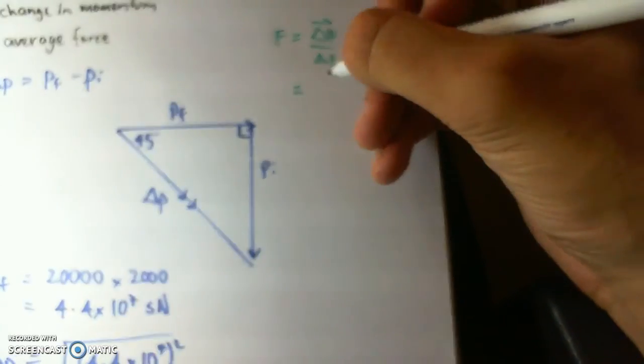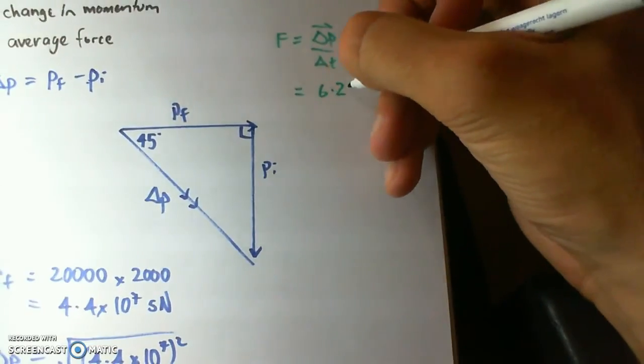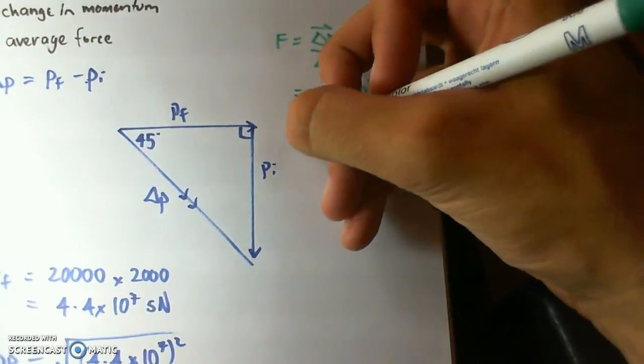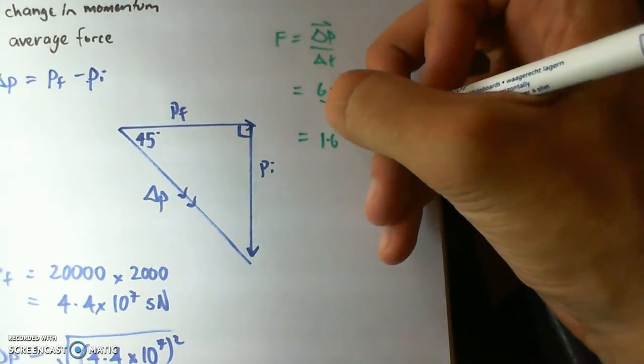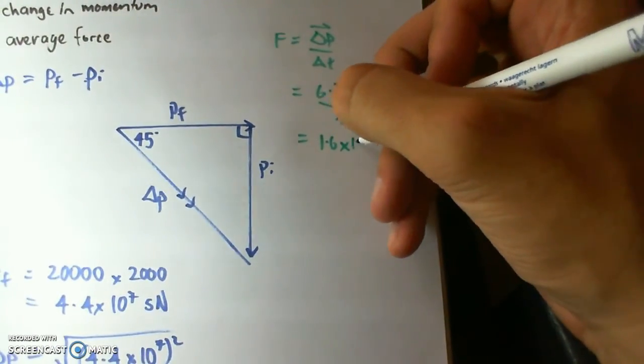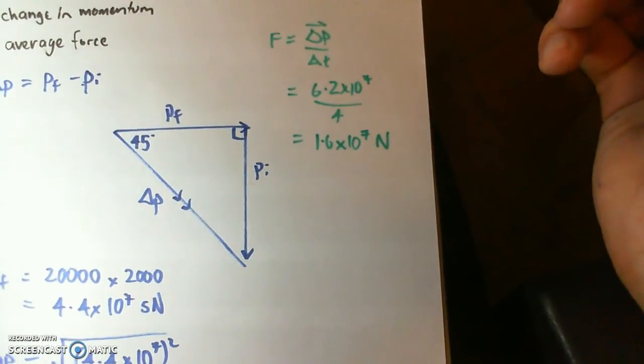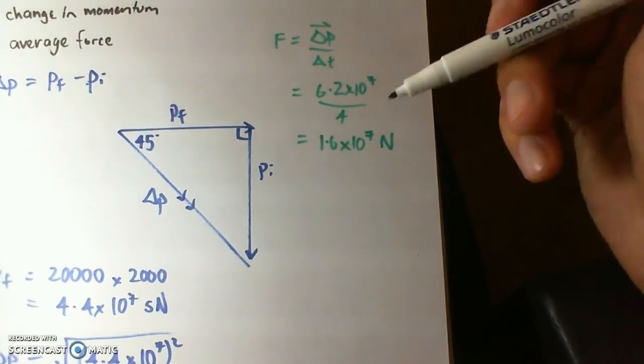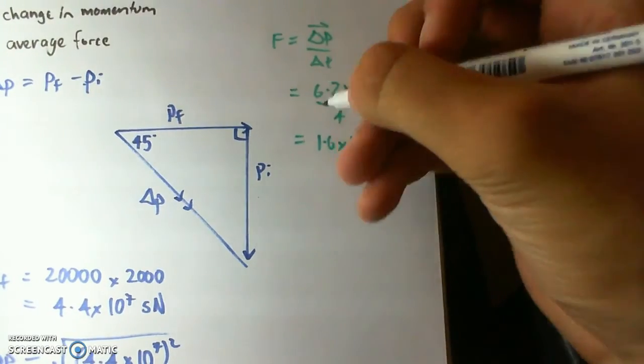So substituting our values, our force is 1.6 times 10 to the 7 Newtons. And this is also in the direction of delta P.